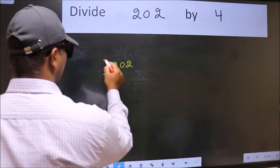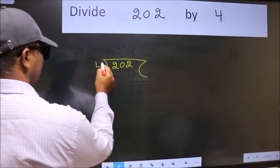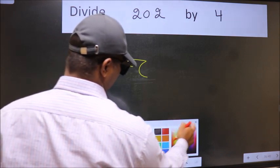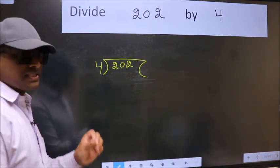2, 0, 2 here. 4 here. This is your step 1.